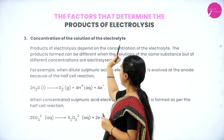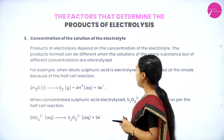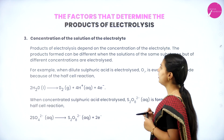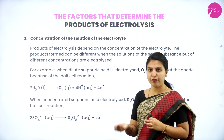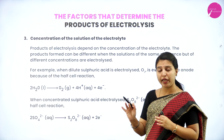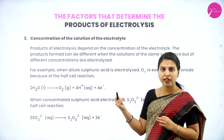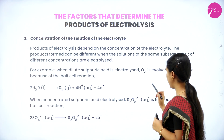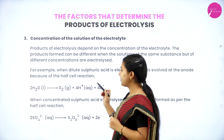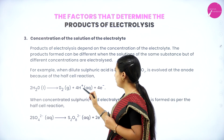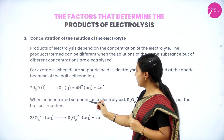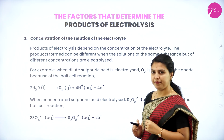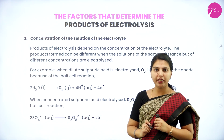Factor 3: Concentration of the solution of the electrolyte. Products of electrolysis depend on the concentration of the electrolyte. The products formed can be different when solutions of the same substance at different concentrations are electrolyzed. For example, when dilute sulfuric acid is electrolyzed, O₂ is evolved at the anode due to the half-cell reaction: H₂O → O₂ + 4H⁺ + 4e⁻. When concentrated sulfuric acid is electrolyzed, sulfate ion in aqueous solution is formed.